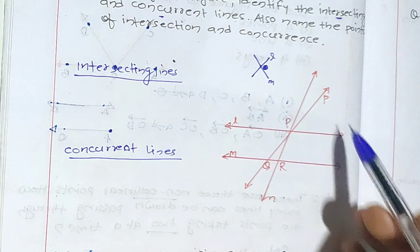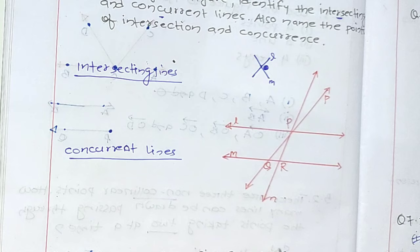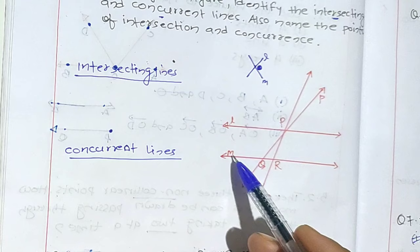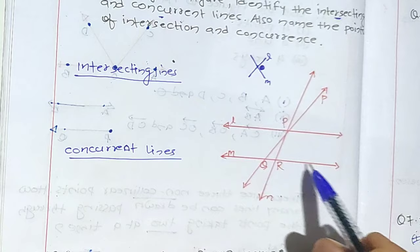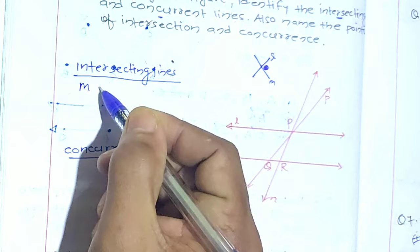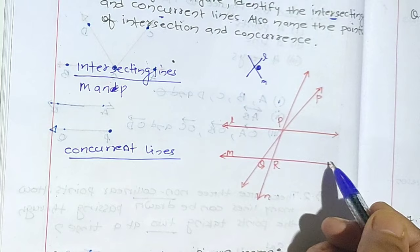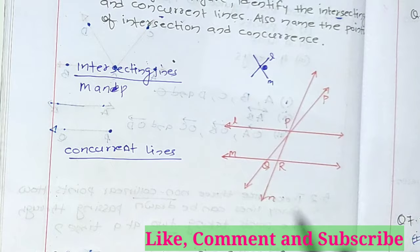Now we need to find out the intersecting lines in this figure. The first intersecting lines will be m and p — they are intersecting over here. So we write m and p. Another one will be l and p — they are intersecting here.